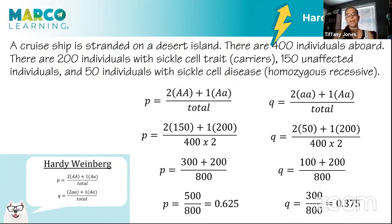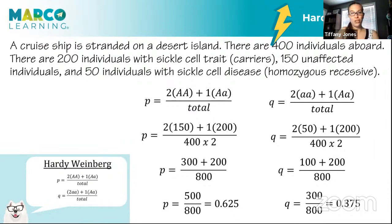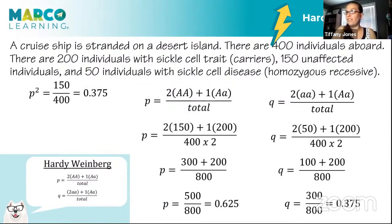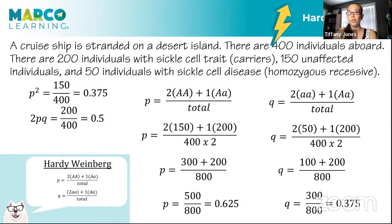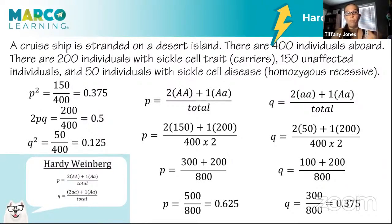Students get tripped up thinking they can square this P value to get P squared, but they can't — we didn't use the equilibrium assumption to get that value. To find the actual genotype frequencies from the data, you calculate directly: homozygous dominant over total individuals is 150 divided by 400 equals 0.375; heterozygous is 200 divided by 400 equals 0.50; and homozygous recessive is 50 divided by 400 equals 0.125.